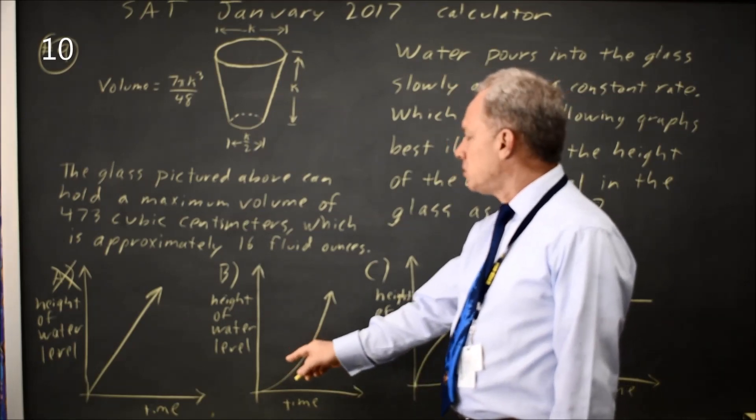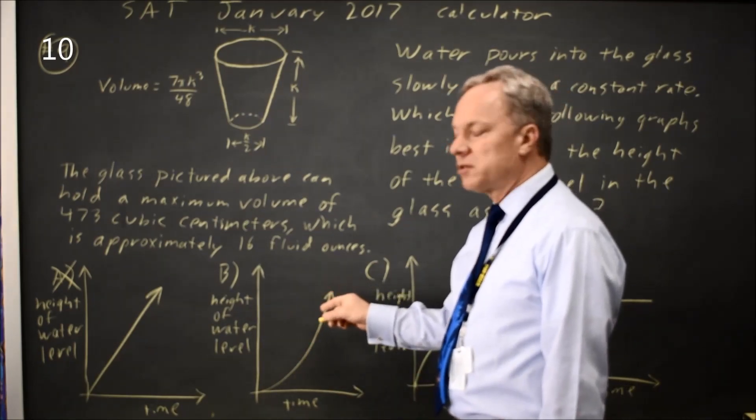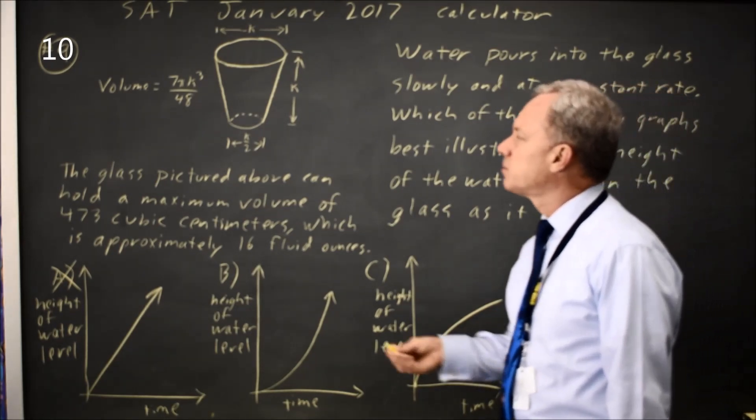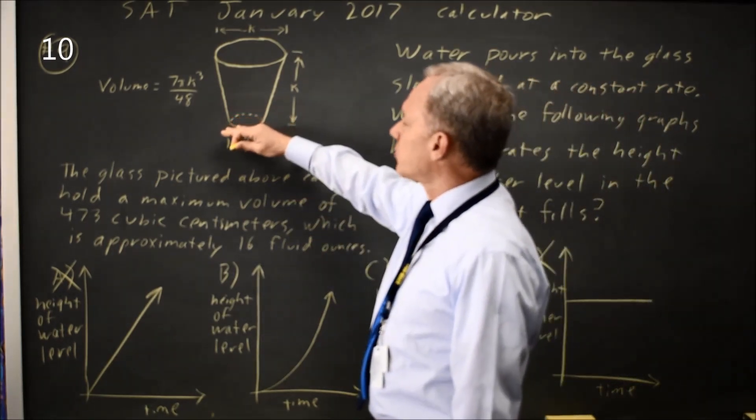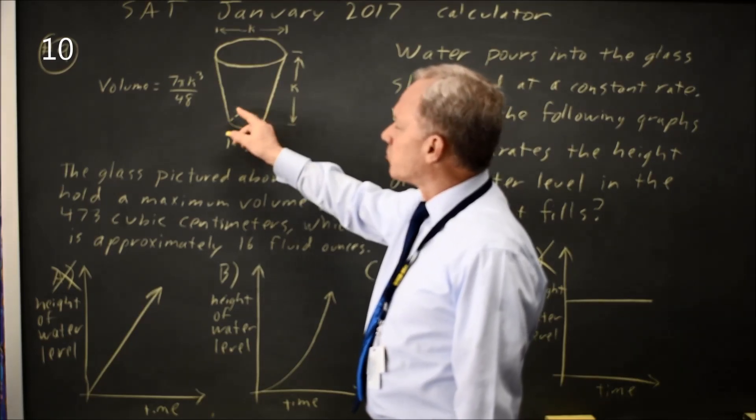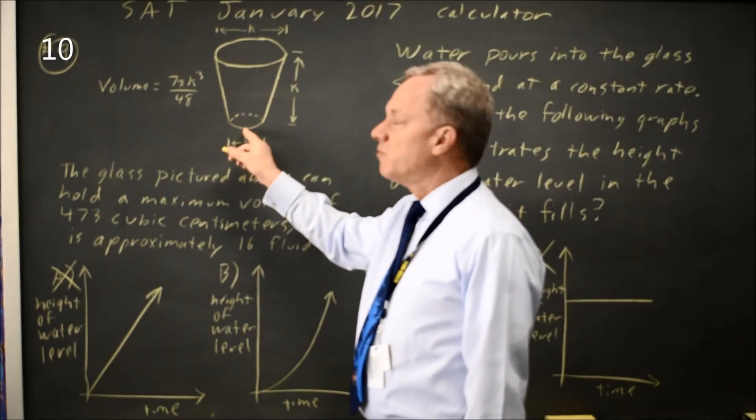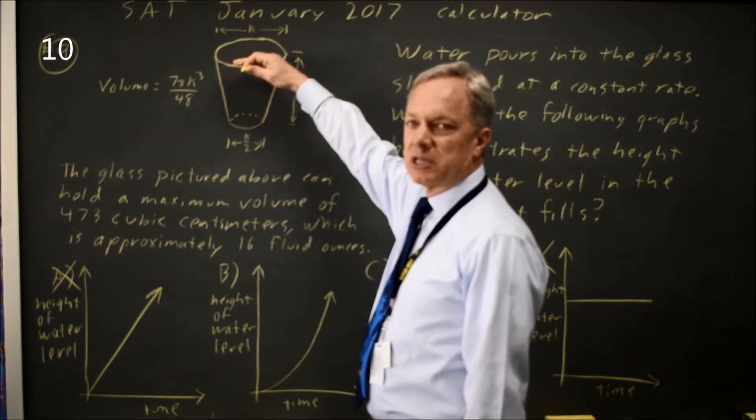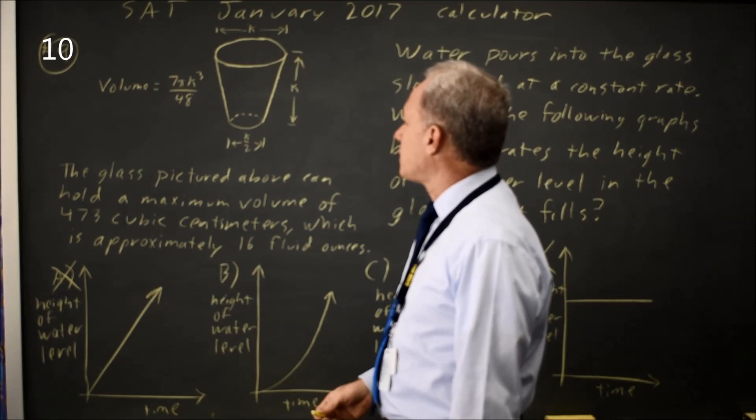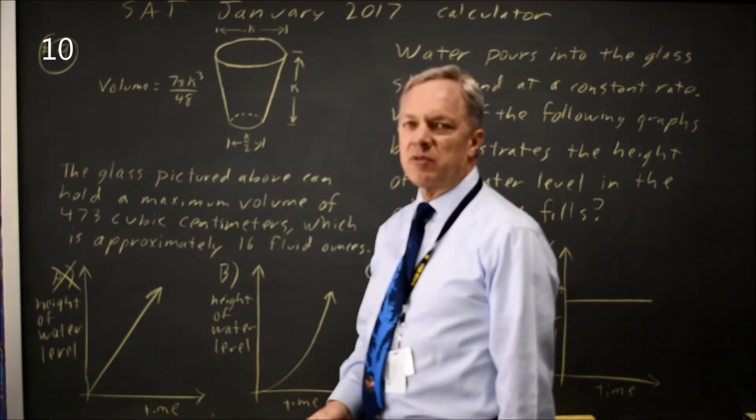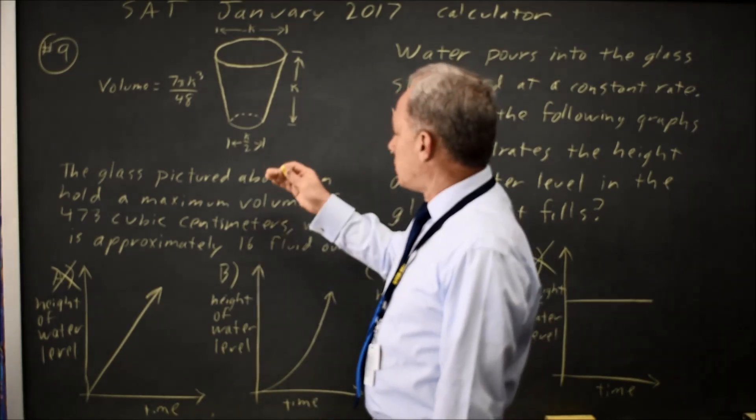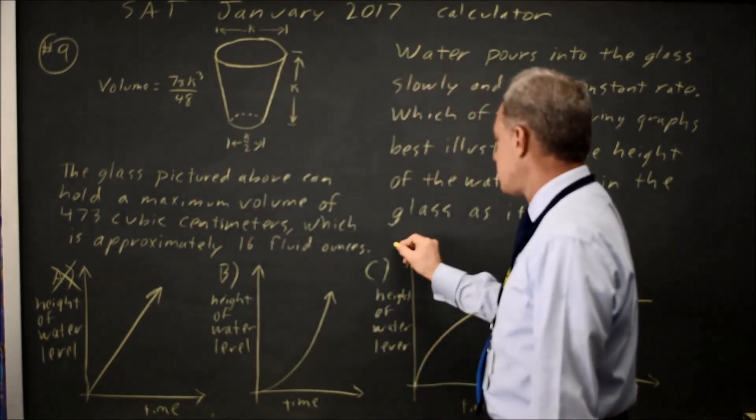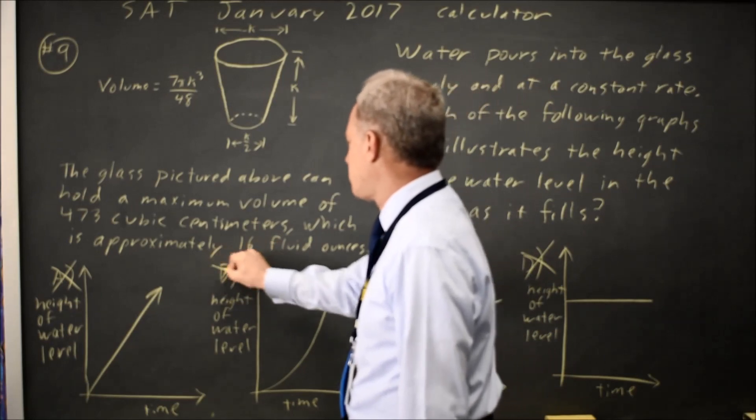The question is does the height rise faster or slower as time goes on. At first, the radius is small so the same volume is a greater height. Later on, with a larger radius, the same volume is a lesser height. If you're adding at a constant rate, same volume per minute, we should be adding less height per minute as time goes on, so that is choice C and not B.